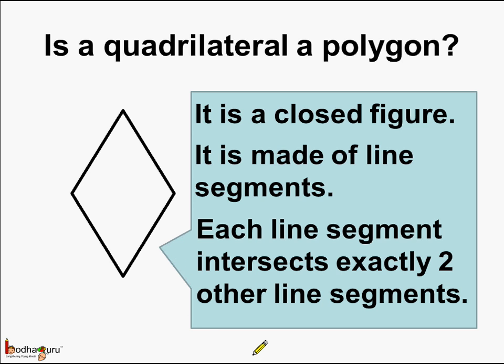each line segment intersects exactly two other line segments. See, if we consider this line segment, it meets only this line segment and this line segment. Same with the other line segments. So each line segment intersects exactly two other line segments.